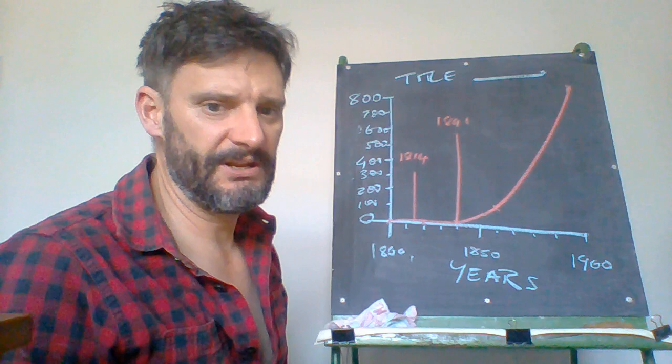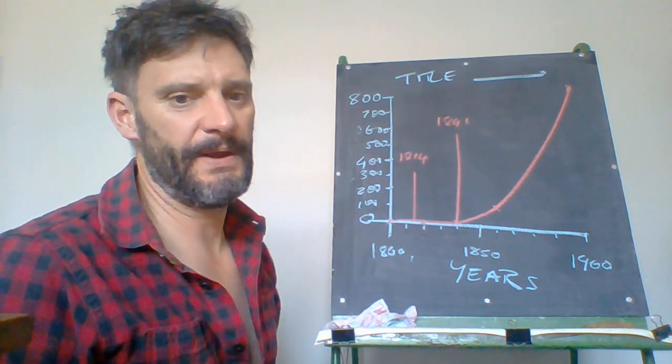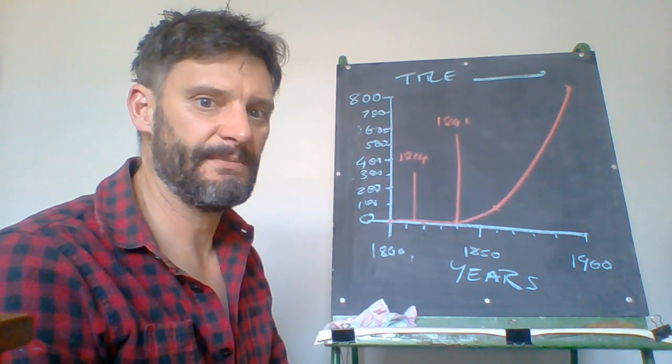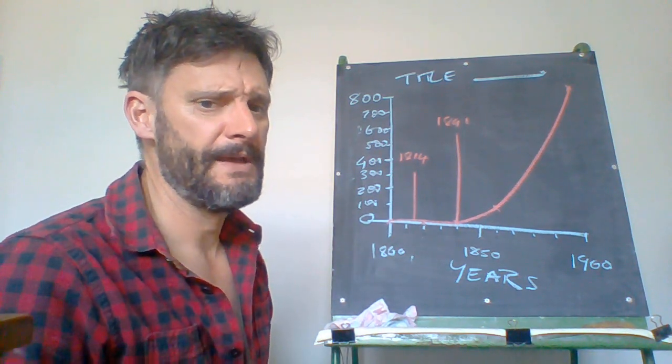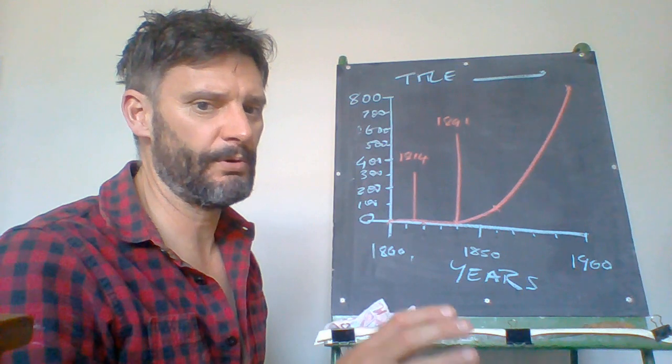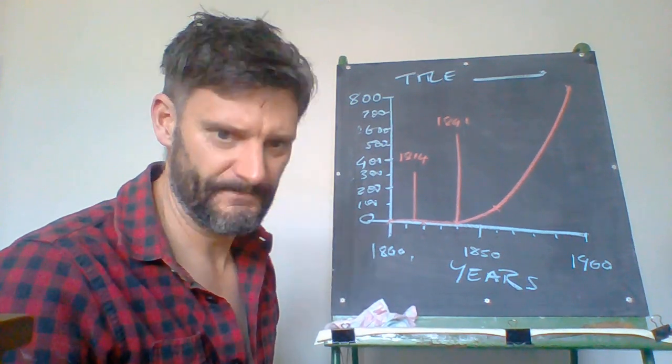That tells me that the Treaty of Waitangi obviously played a major part in allowing European immigration into New Zealand and then there's a couple of other things that really kicked off after that as well. But that's later on in the report and I'll leave it with you guys to have a look at. Have fun.